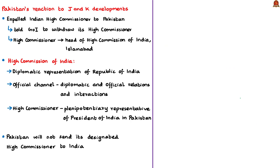The next news article covers Pakistan's reaction to the Kashmir issue. India revoked Article 370 which gave special status to Jammu and Kashmir, and a bill was passed to reorganize the state into two Union Territories — Jammu & Kashmir and Ladakh. Both India and Pakistan claim Jammu and Kashmir. As a first reaction, Pakistan expelled the Indian High Commissioner to Pakistan, asking the Government of India to withdraw its High Commissioner from Islamabad, which is the capital of Pakistan.